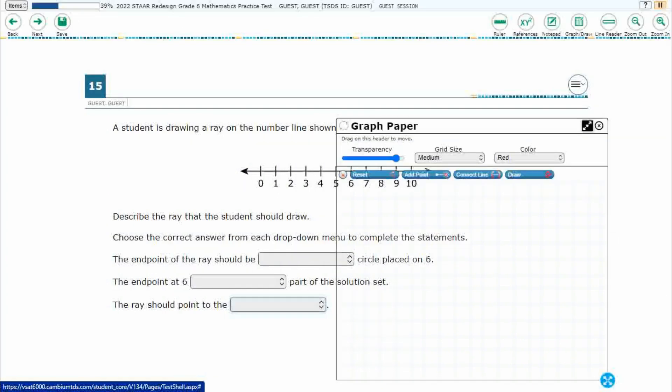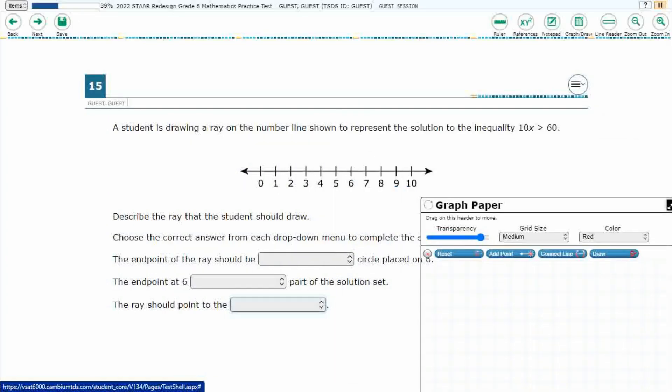And before we get too far into it, let's just notice that you've got three options. The endpoint of the ray should be either an open or solid circle. The endpoint is or is not part of the solution set. And then the ray should point to the left or the right. Okay, so we draw it first and then these should be able to be pretty easy.